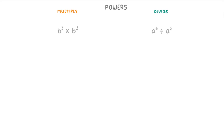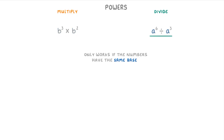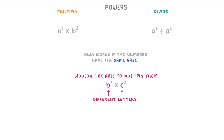In this video, we're going to look at how to multiply or divide numbers when they have powers. The first thing to say is that the rules we're going to cover only work if the numbers involved both have the same base. For example, in this multiplication one they both have a base of b, and in this division one they both have a base of a. Whereas if we had a question like b cubed times c squared, we wouldn't be able to multiply them together, because the bases of b and c are different letters.